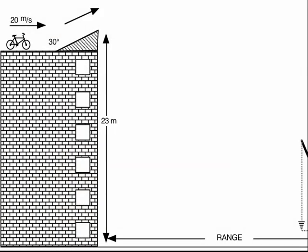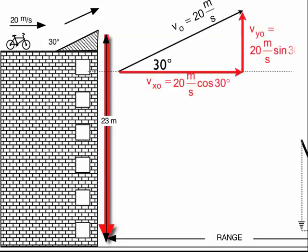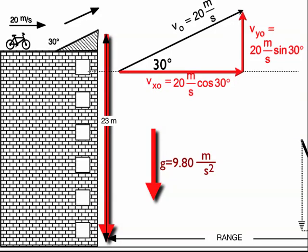Now, with our table of givens, we have the bicycle going off the top of the building. It's going to land 23 meters below. In the previous video, we'd established this triangle for the initial velocity. And we know the acceleration is 9.8 meters per second squared.